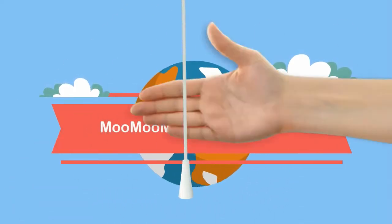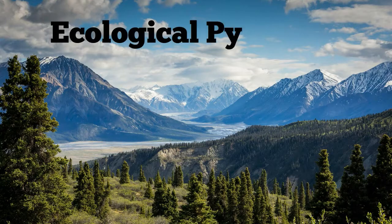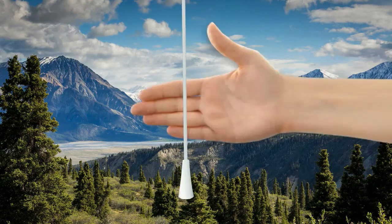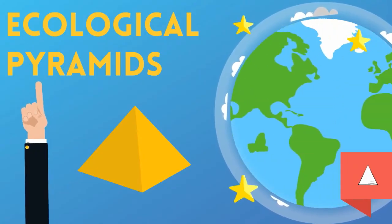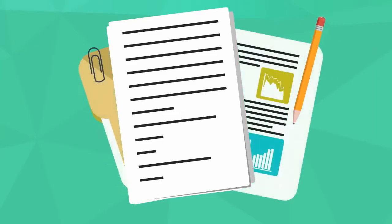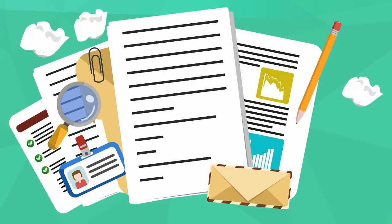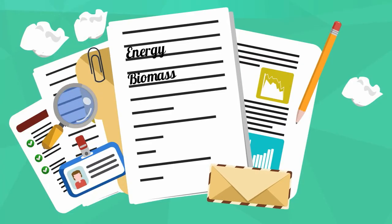Welcome to MooMooMath and Science. In this video I'd like to talk about ecological pyramids. Ecological pyramids is another way to show how energy flows through an ecosystem. An ecological pyramid is a diagram that can show the relative amounts of energy, biomass, or the number of organisms at each trophic level in an ecosystem. Let's look at three types.